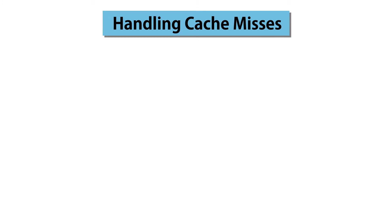In this video, we're going to explain what happens when you have a cache miss, whether for read or write. We'll assume that you already understand how to determine whether an address is stored in the cache, though we'll review that very briefly. We do have a separate video on that topic.